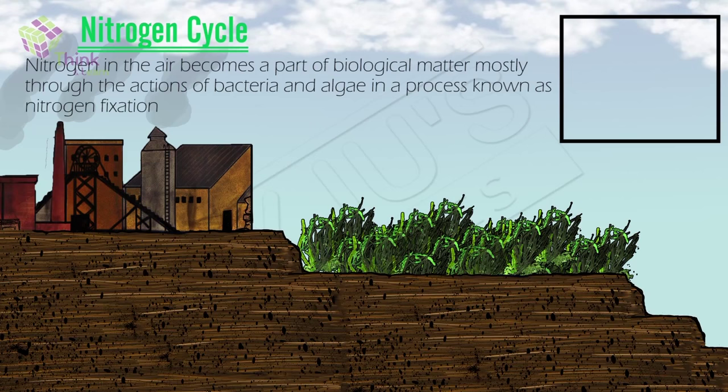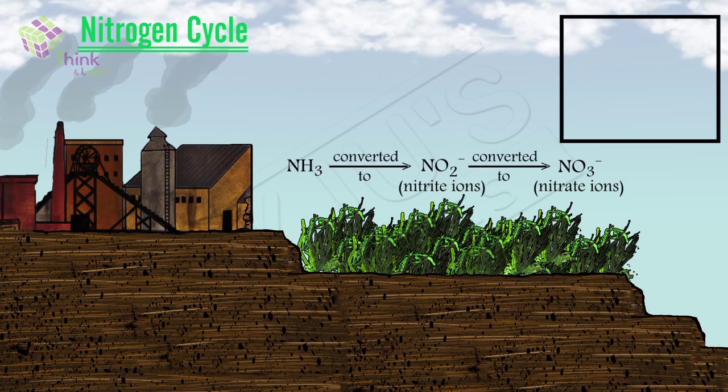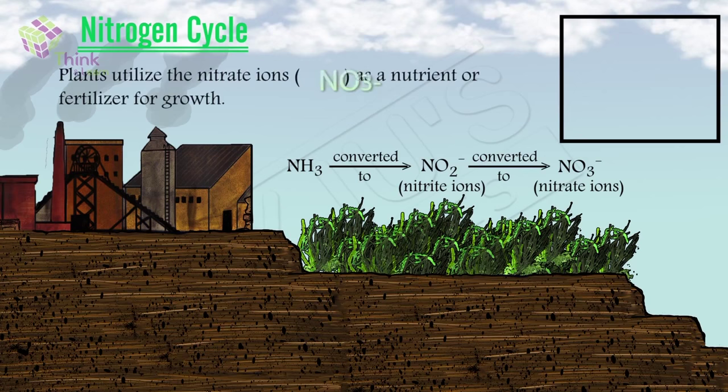Legume plants such as clover, alfalfa, and soya beans form the nodules of the roots where nitrogen-fixing bacteria take nitrogen from the air and convert it into ammonia, that's NH3. The ammonia is further converted by other bacteria into nitrite ions, which is NO2-, and then finally nitrate ions. Plants utilize the nitrate ions as a nutrient or fertilizer for growth.